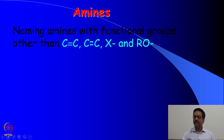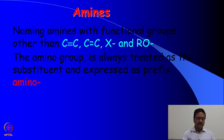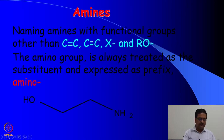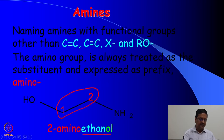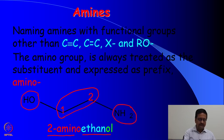When you have multiple functional groups, amines can be named with functional groups other than C≡C, C=C double bond, halogen, and alkoxy groups. The amino group is treated as a substituent expressed as a prefix 'amino'. For example, a molecule with OH and NH₂ groups at two ends — OH has higher priority. The compound is ethanol, and at position 2 you have the amine group. So we write it as 2-aminoethanol.